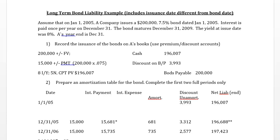Let's begin with the first situation, which is basically a review of bonds. On January 1st, 2005, a company issues $200,000, 7.5% bonds that are dated January 1st. Interest is paid annually on December 31st. The bond matures in 2009, so the term is 5 years, and the yield is 8%. We can see we have a discount bond because the bond is paying less interest than the market for investments of similar risk.